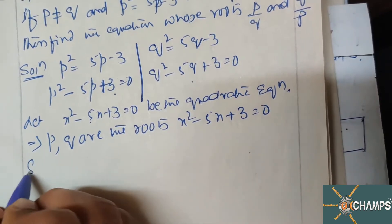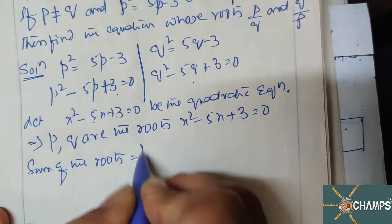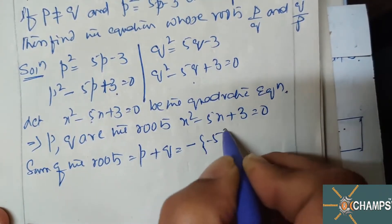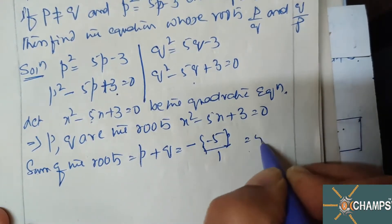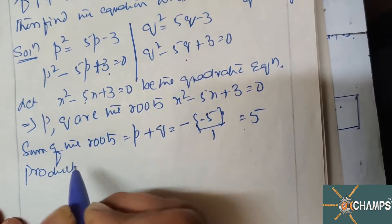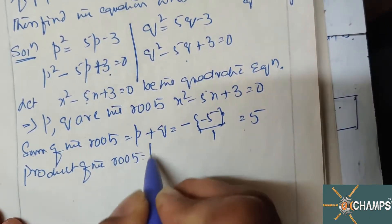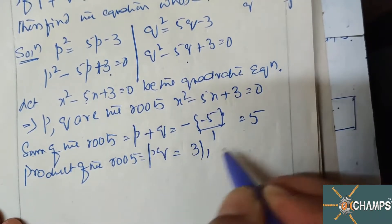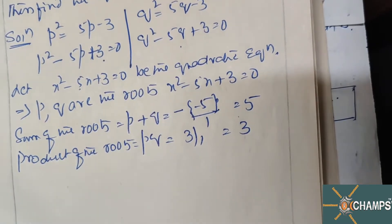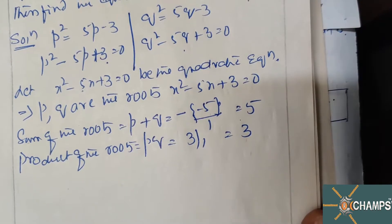So let us calculate: sum of the roots p + q = minus of x-coefficient divided by x²-coefficient = 5. Product of the roots pq = constant term divided by x²-coefficient = 3. So p + q = 5 and pq = 3 are calculated.